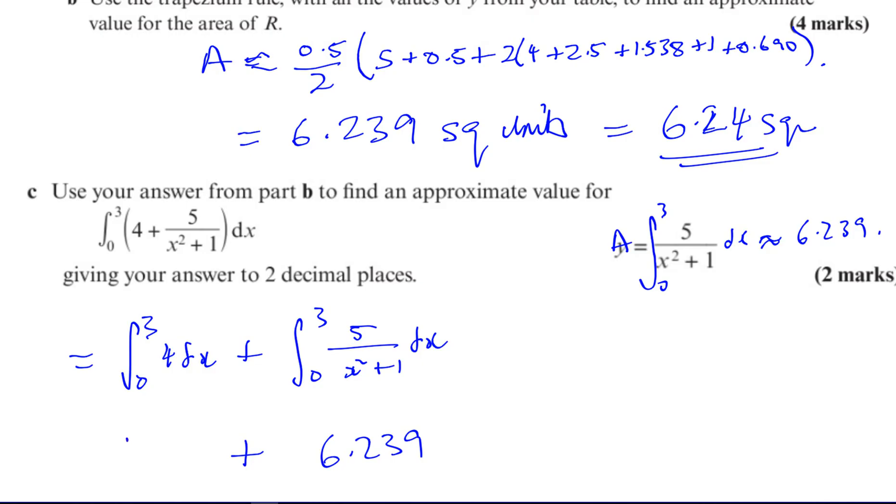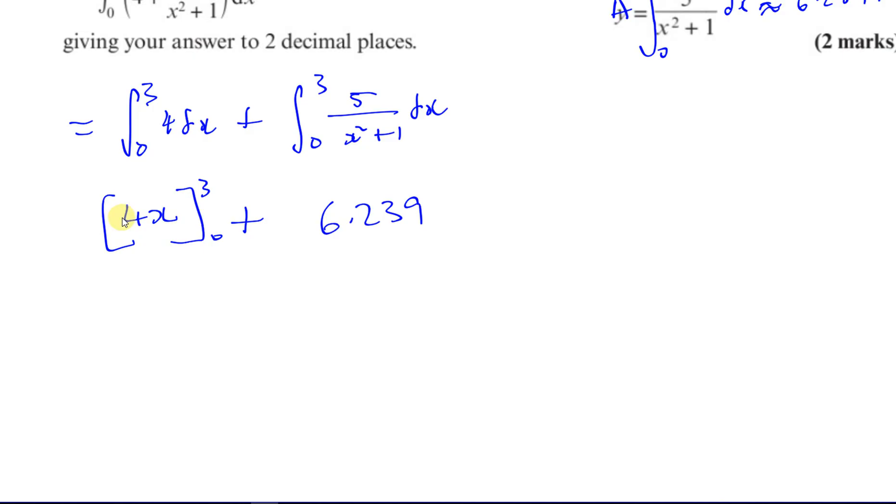Now, when I integrate this, I'm going to get 4x, and I have my definite integral, so I've got to put inside there, 3 and 0. So what's that going to give me? Well, that's going to give me 4 times 3, which is 12, minus 0. So that will be 12, plus 6.239. So that proximal area we're looking for is 18.239, which to 3SF will be 18.2 square units. Sorry, my pen keeps disappearing. Can't see where it is. Okay, so there we have the answer to that question. I hope that was clear and understandable.